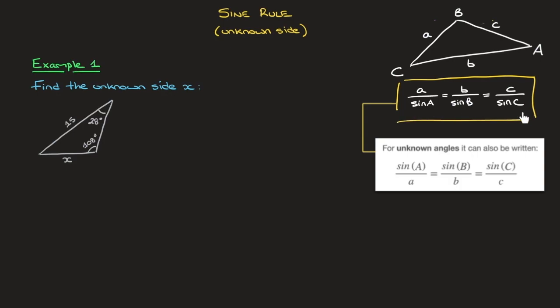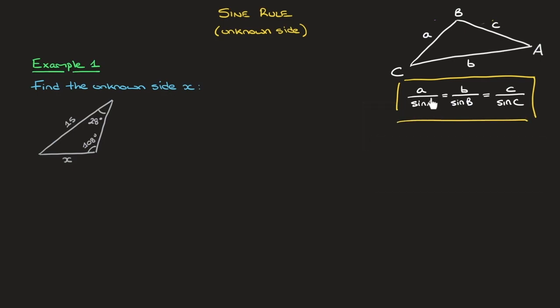Now, an important thing to realize with this rule here is that each of the three parts of it is made from a pair of a side length and the sine of its opposite angle. Indeed, it's telling us that A divided by sine of A equals B over sine of B, and that equals C over sine of C.